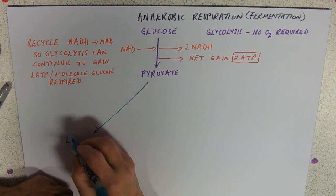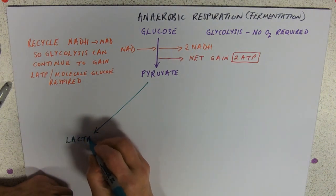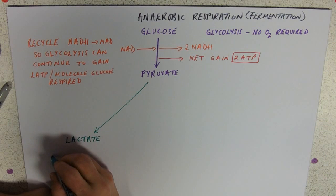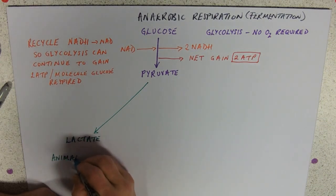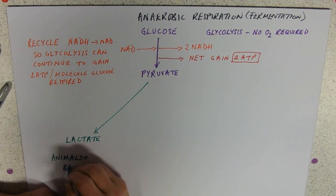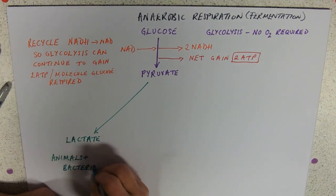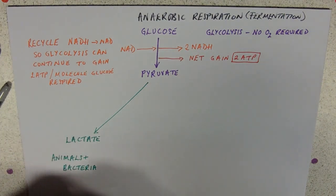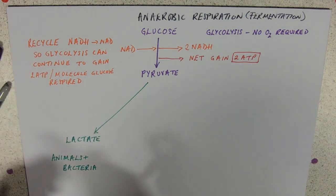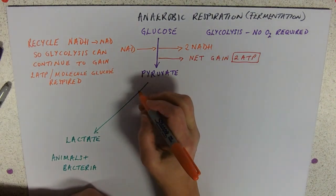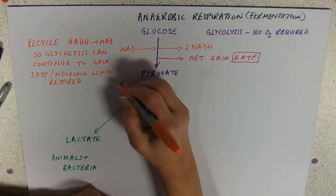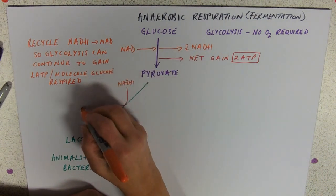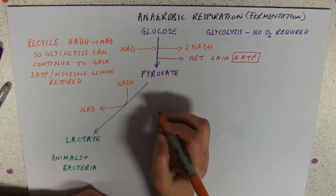The one you're most familiar with is the one that results in lactate. Types of organisms that do this: we're talking animals — that includes us obviously — and bacteria, which obligingly make yoghurt out of milk by that method, which is why yoghurt tastes sour, because it's got lactic acid in it. The relationship between pyruvate and lactate is that pyruvate takes the hydrogen off NADH.